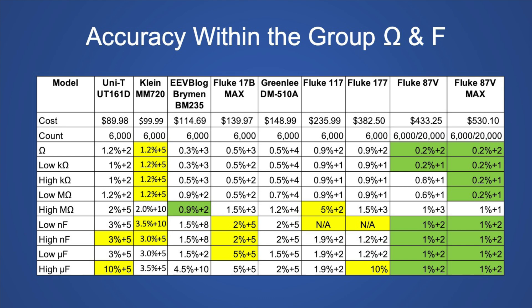Here's the accuracy specifications for this group of 6,000 count meters that shows the resistance and capacitance. And the 117 is not outstanding in any area.